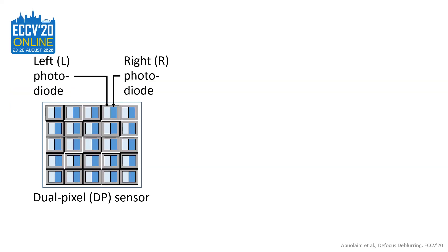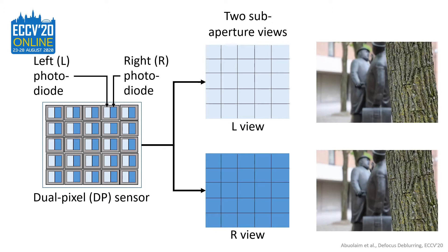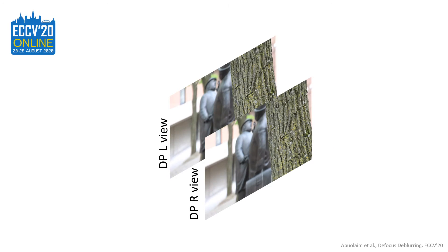So now, we will talk about dual pixel sensors or DP sensors. These sensors were designed by Canon to assist in camera autofocus. These sensors are designed with two photo diodes at each pixel location on the sensor. The DP sensors produce two sub aperture views of the scene, denoted in this work as left and right views. These views are mainly used to calculate the appropriate lens position to focus on a particular scene region, and are discarded afterwards. In our work, we utilize DP sub aperture views to reduce the unwanted defocus blur. To the best of our knowledge, we are the first to leverage DP views as input to defocus the image.